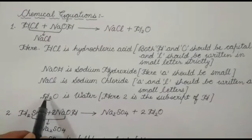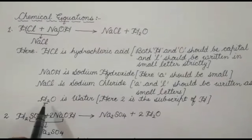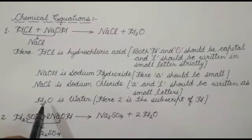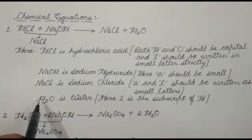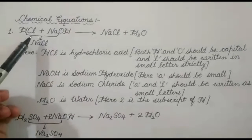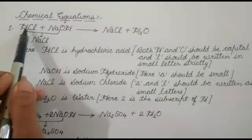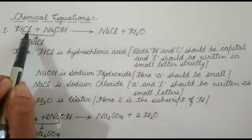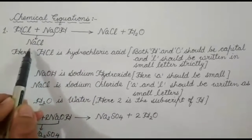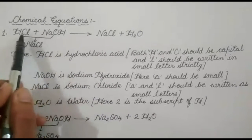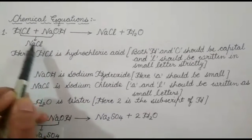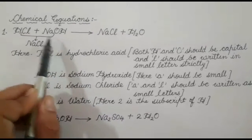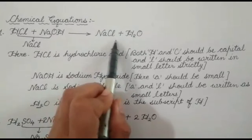For water H₂O, the two should be a subscript of H. So whenever HCl reacts with sodium hydroxide, sodium and chlorine together make sodium chloride, and sodium and chloride ions together make sodium chloride and water.